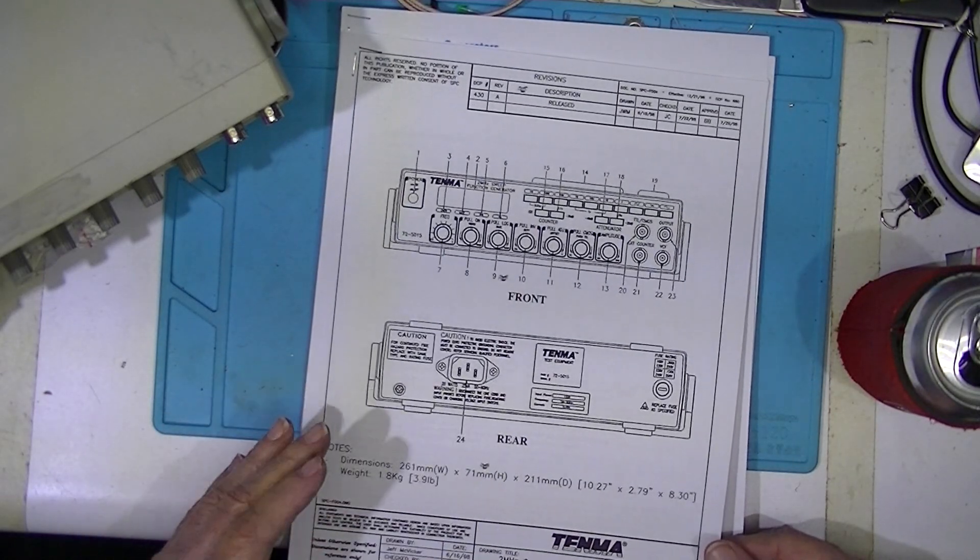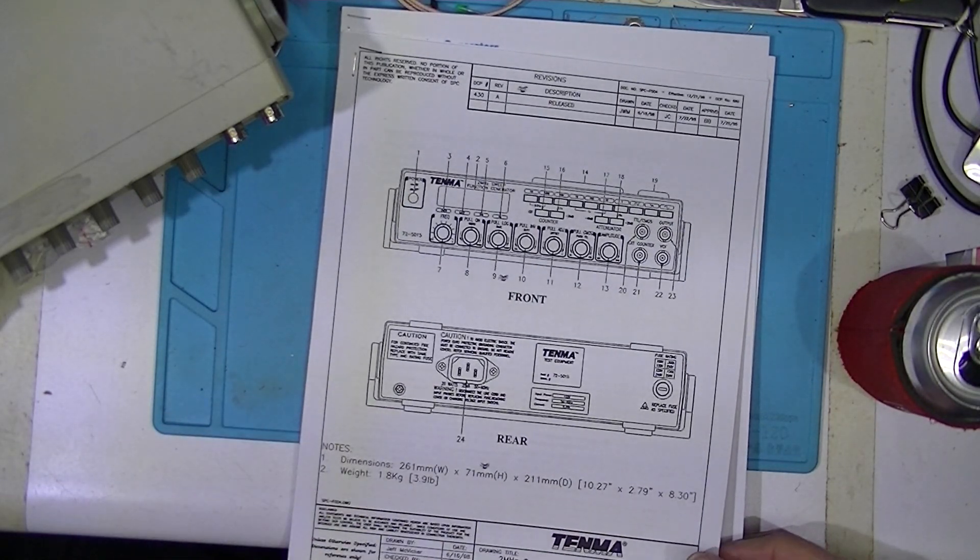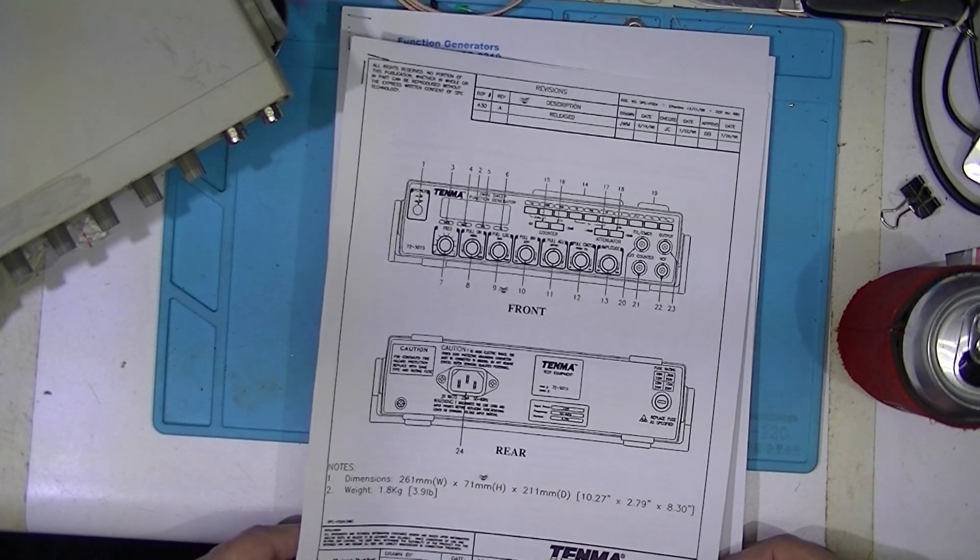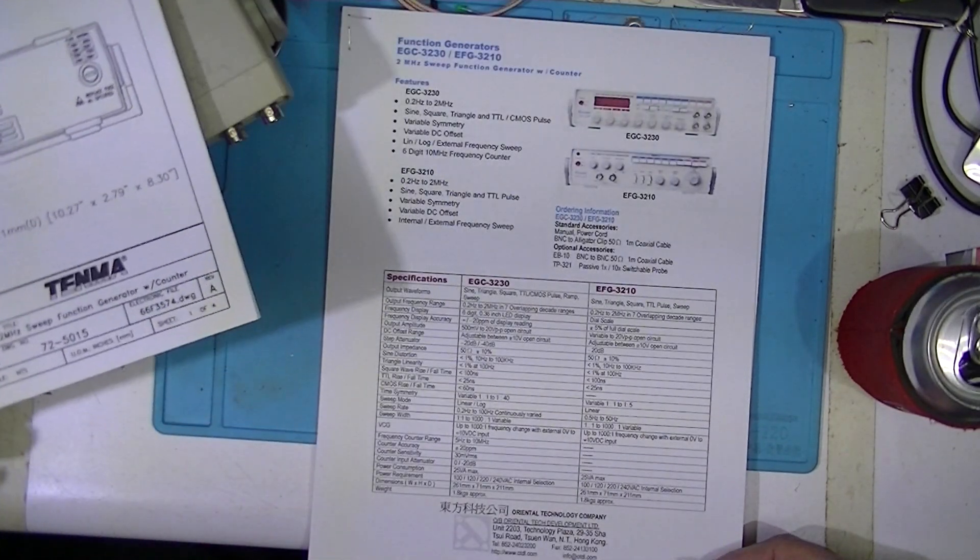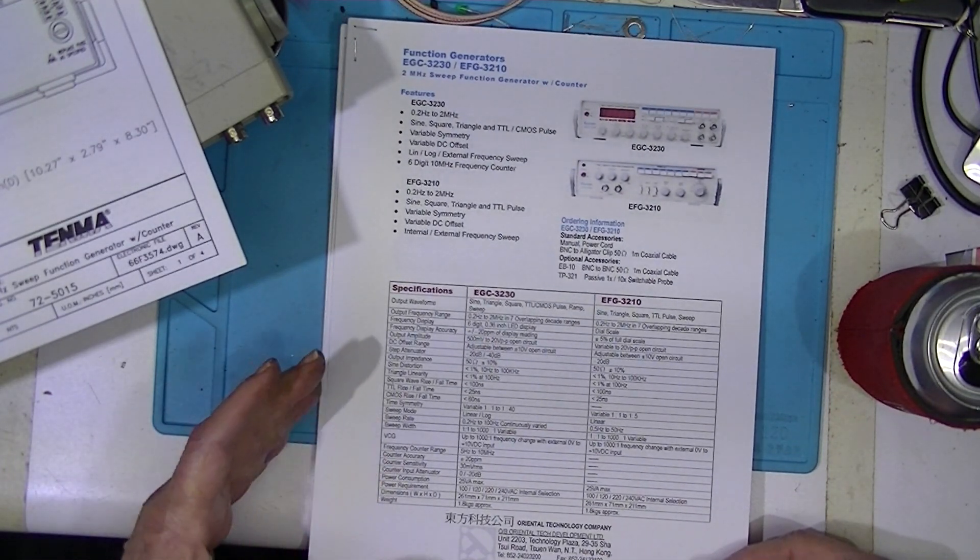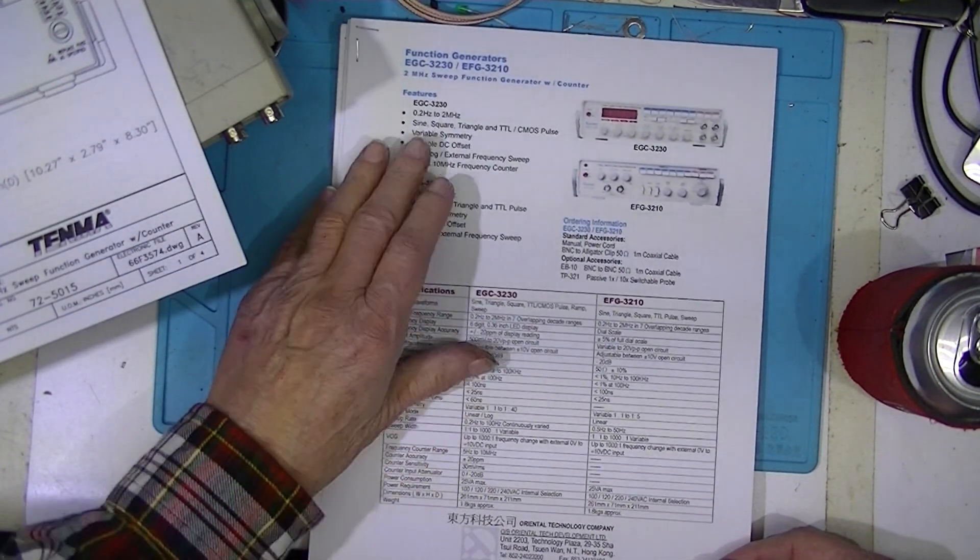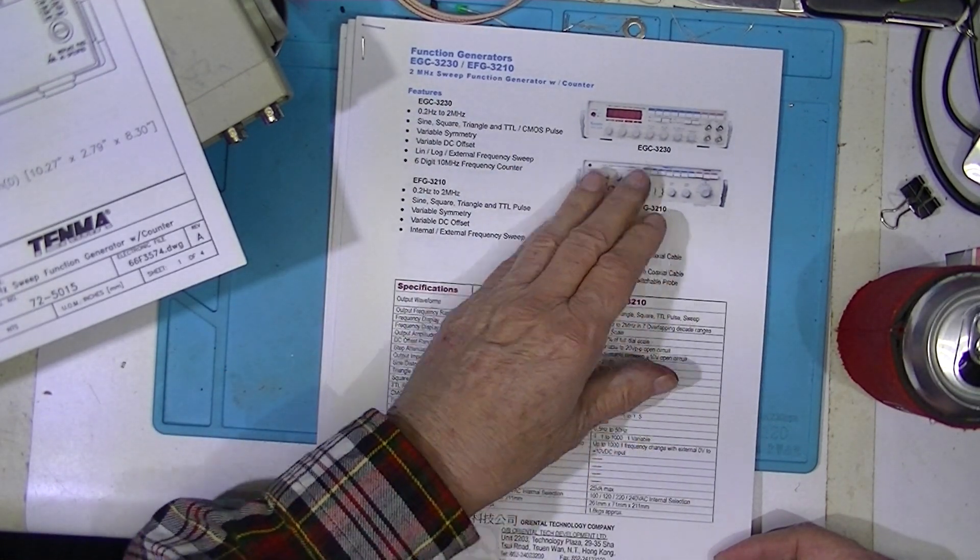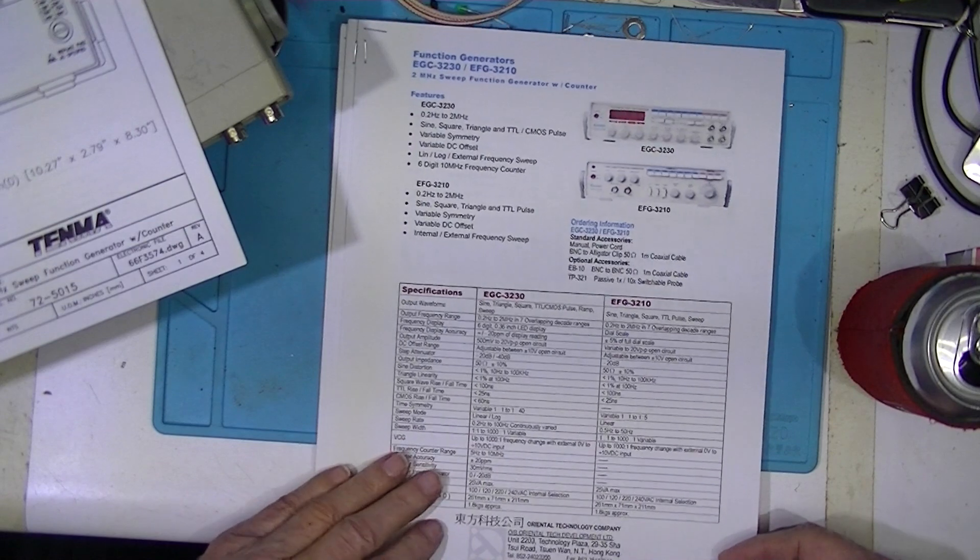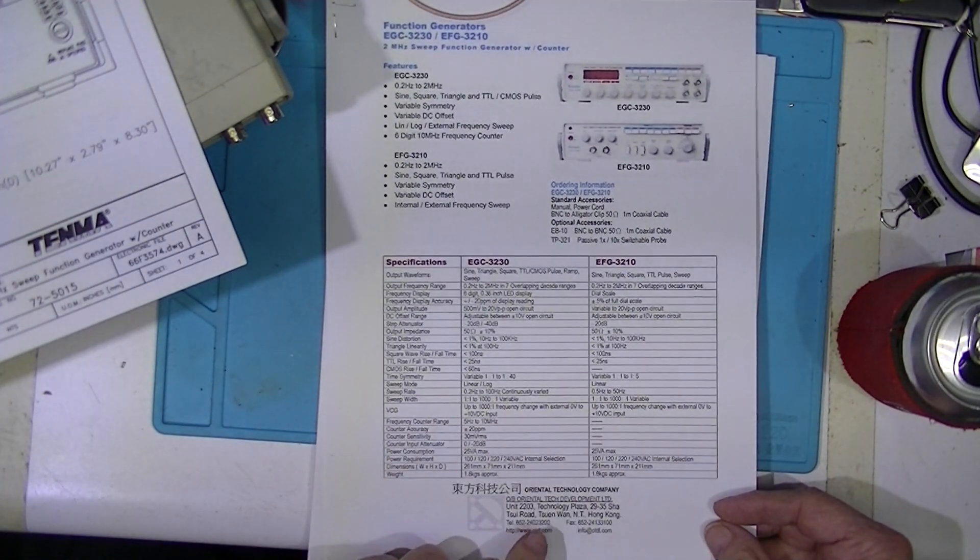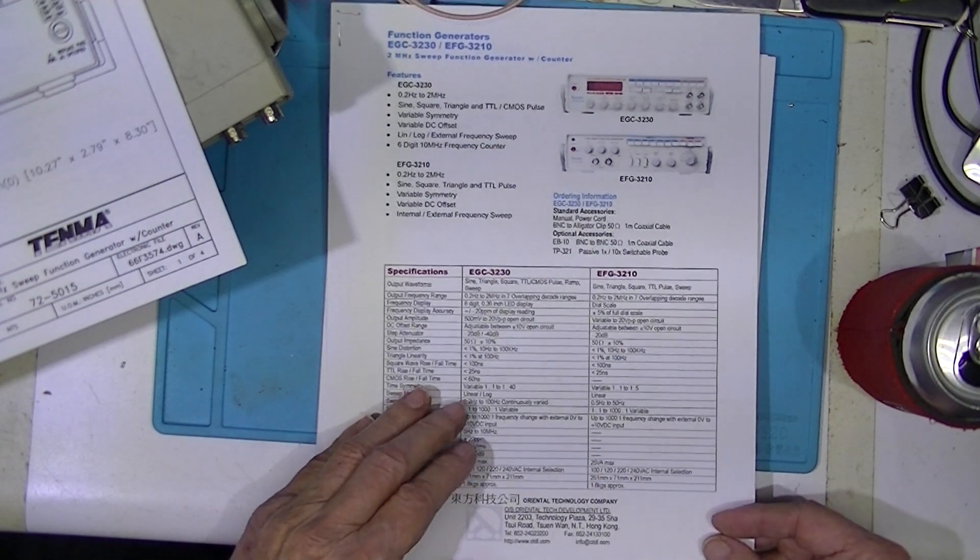Now Tenma does make, in some cases, very complete manuals, but not in this case. I did find out it was apparently equivalent to this ECG-3230. And that may be a manufacturer of it, Oriental Tech Development Limited, Hong Kong.